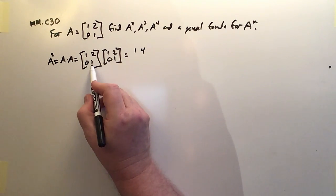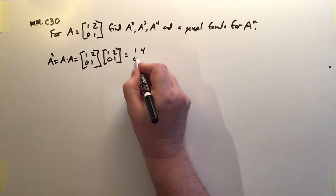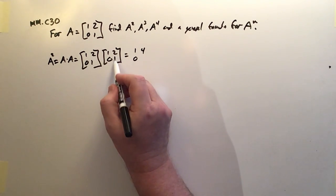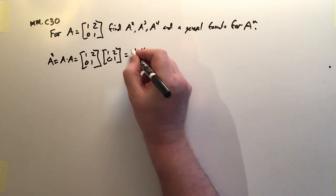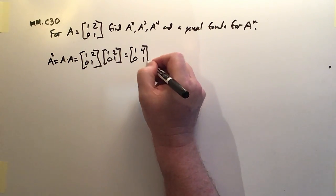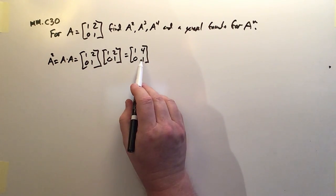1, 2 times 2, 1 produces 2 plus 2, that's 4. The bottom row, 0, 1 times 1, 0 produces 0, and 0, 1 times 2, 1 produces 1. So there it is. That is A squared, A times A.